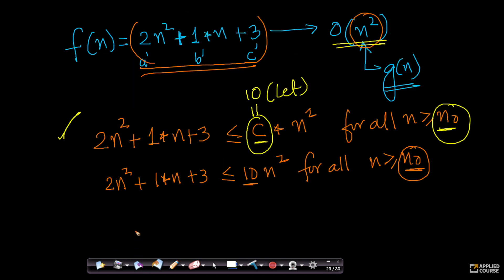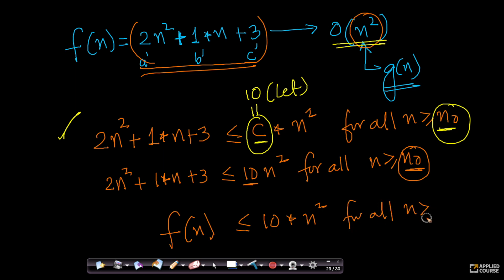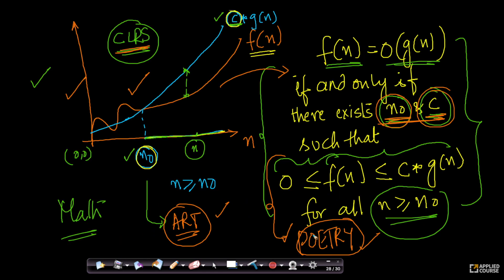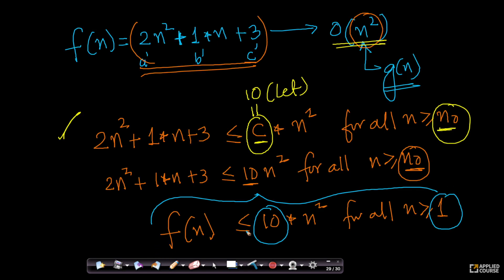In other words, I can say that my f of n is less than or equal to 10 times n squared for all n greater than or equal to 1. Here I have found my constant c equals 10 and my constant n0 equals 1. The definition says there exist constants c and n0 such that f of n is less than or equal to c into g of n — and we have proved exactly that.